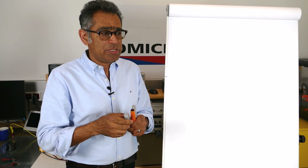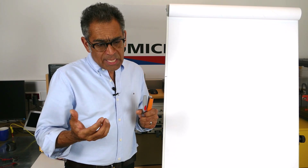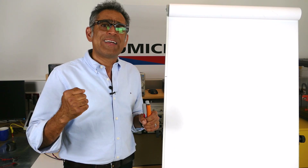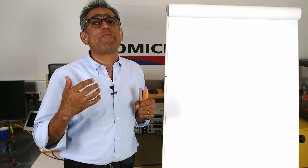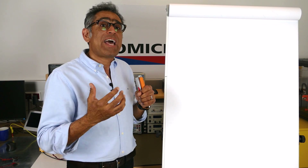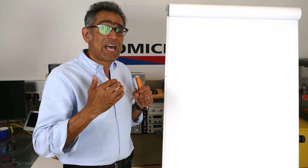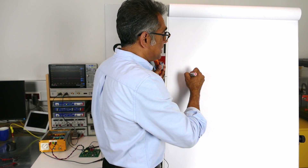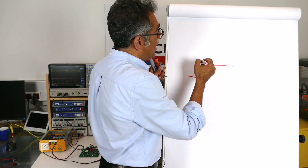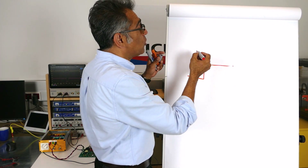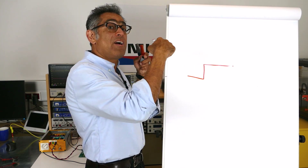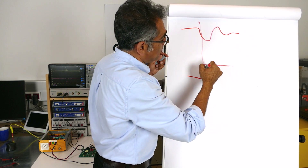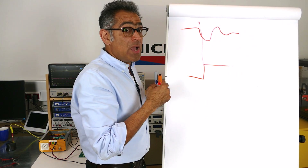For energy storage, if you imagine you've got a power supply and you give it a massive load step, the energy that you're taking has to come from somewhere. If you don't have enough input capacitance, the output will dip. If you give a load step and you have too little input capacitance, the input line voltage will dip and it would look like this.